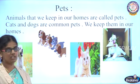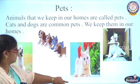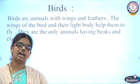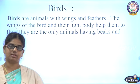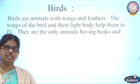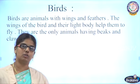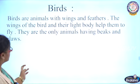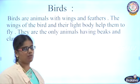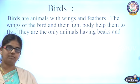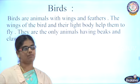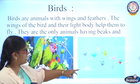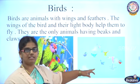Dogs are common pet animals we keep at home. Next, birds. Birds are the only animals which have wings and feathers. With the help of wings and feathers, they are able to fly. Birds have wings and feathers, and their body is very light weight. With the help of that light body weight, they can easily fly from one place to another.